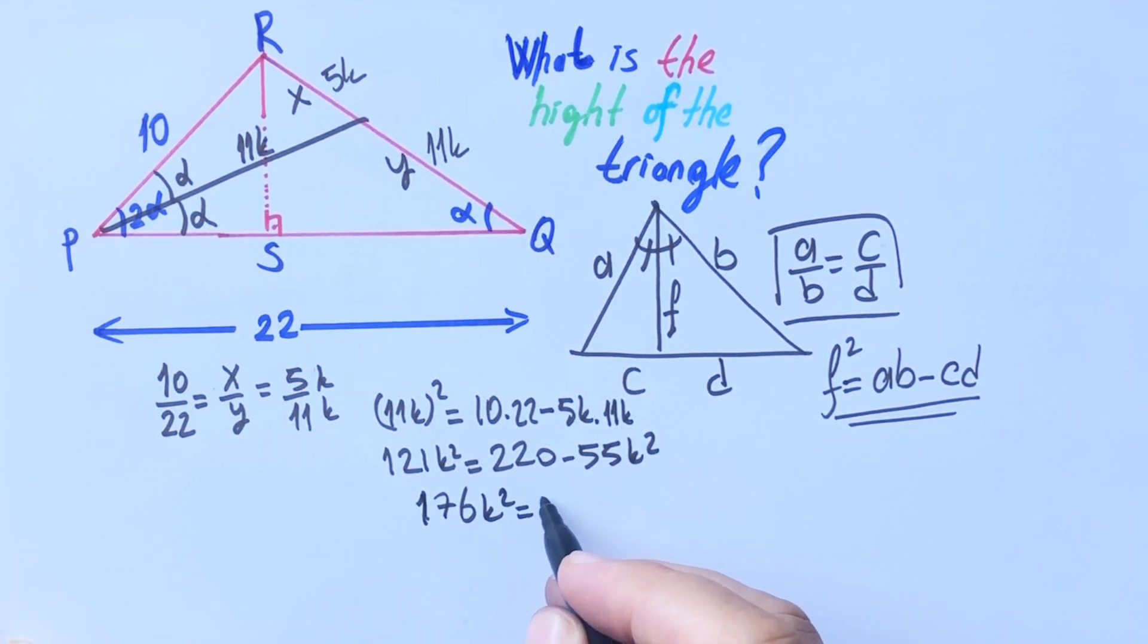176 k squared equal 220. If we simplify the equation, 176 k squared equal 5 over 4, so k is going to be root 5 over 2.